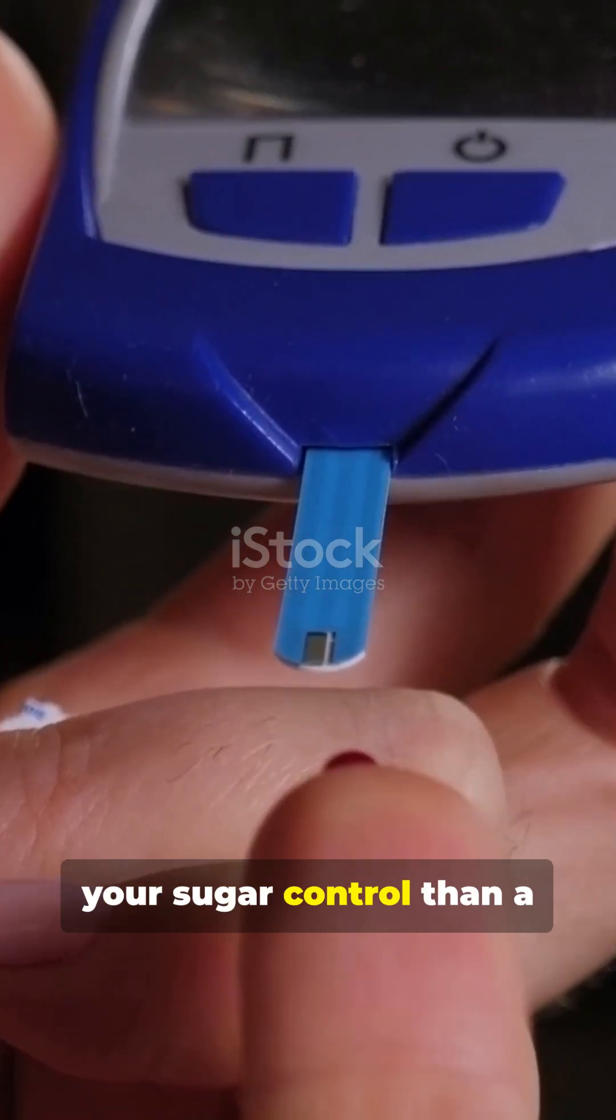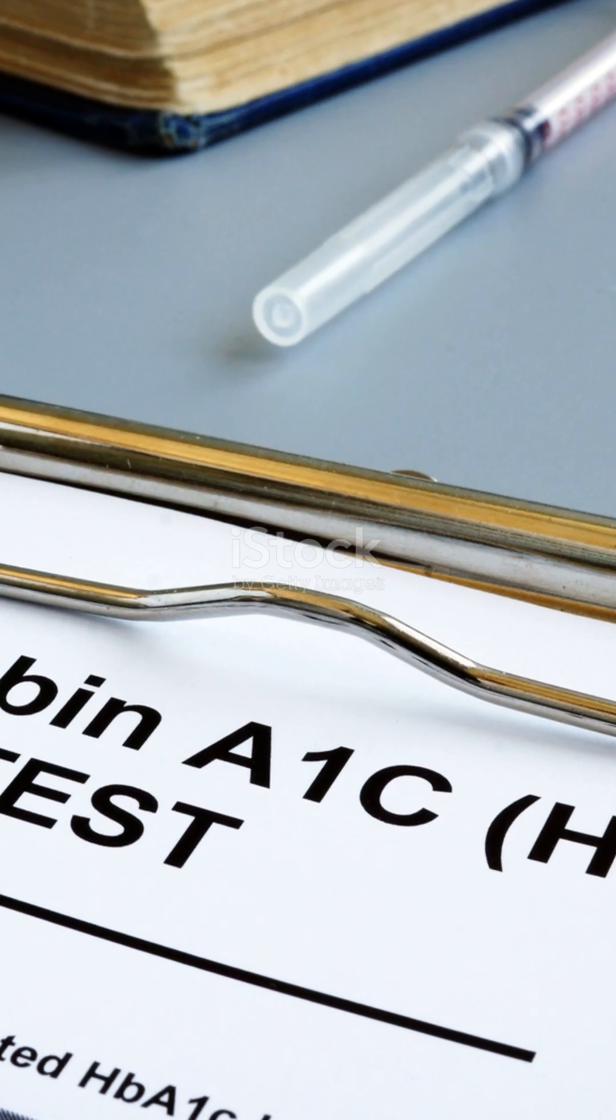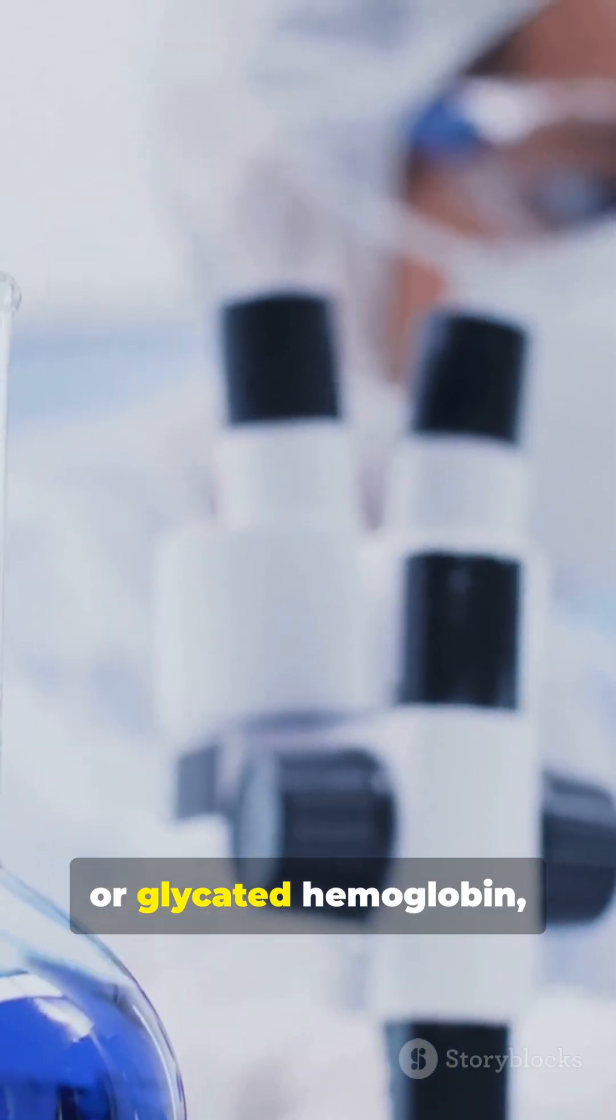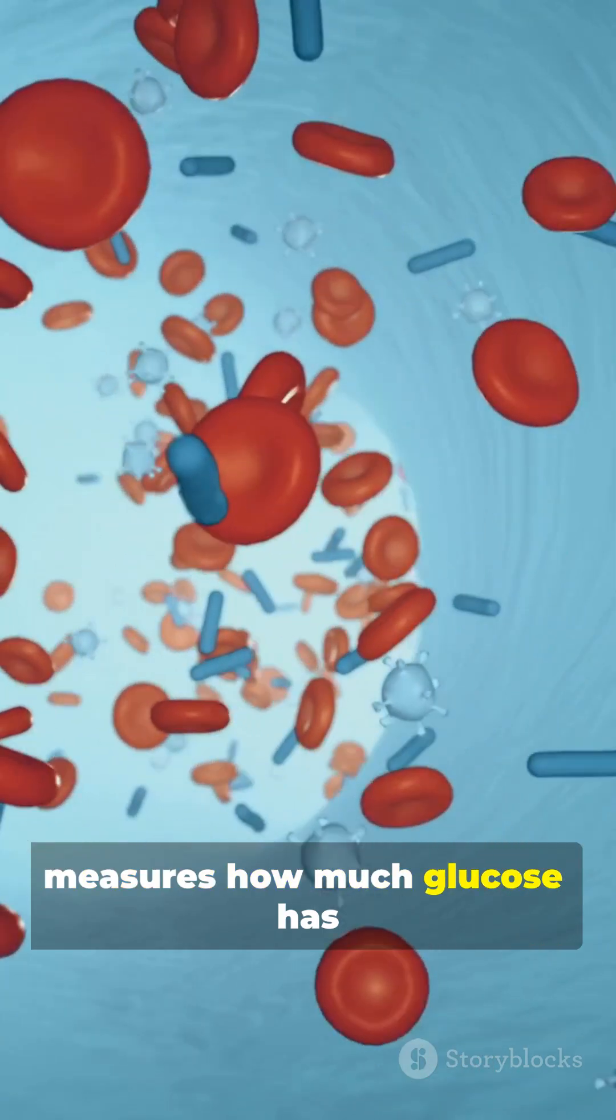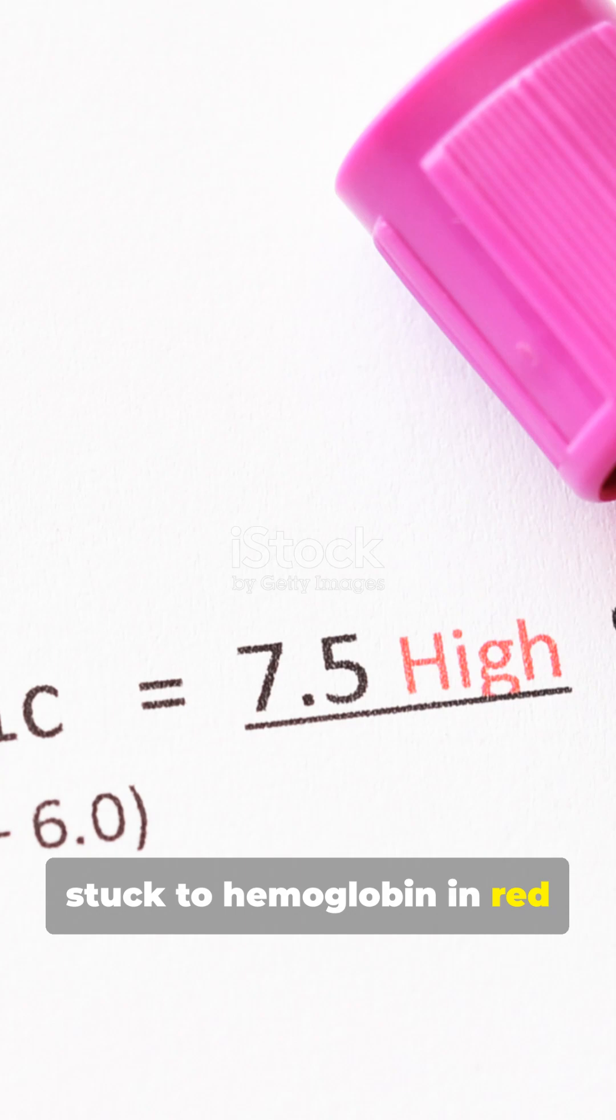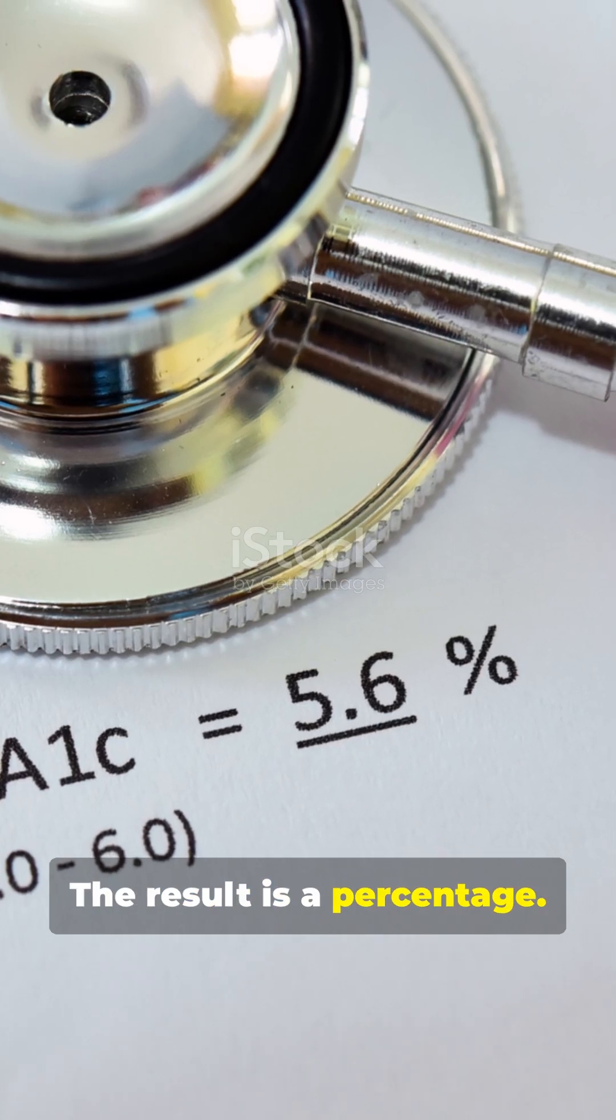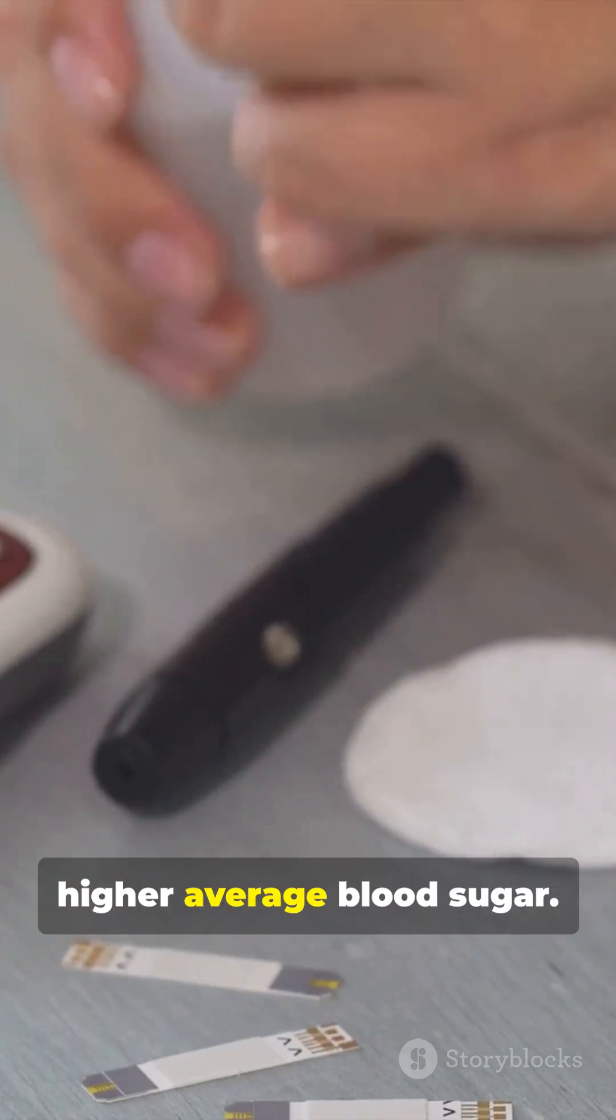Want a better snapshot of your sugar control than a single finger prick? Meet HbA1c. HbA1c, or glycated hemoglobin, measures how much glucose has stuck to hemoglobin in red blood cells over the past 8 to 12 weeks. The result is a percentage. Higher percent, higher average blood sugar.